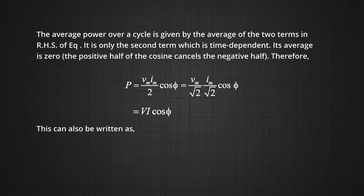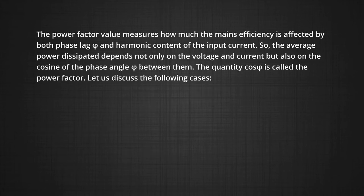This also can be written as P equals I squared Z cos phi since we know P equals I squared R. However, the power factor value measures how much the main efficiency is affected by both the phase lag phi and its harmonic content of the input current.